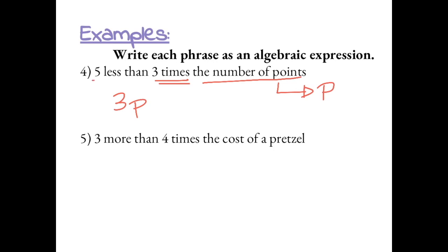And then we want 5 less than 3 times the number of points, or 5 less than 3P. So 5 less than 3P would be 3P minus 5.